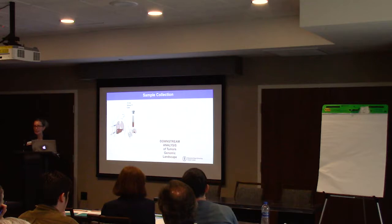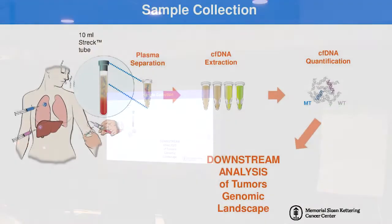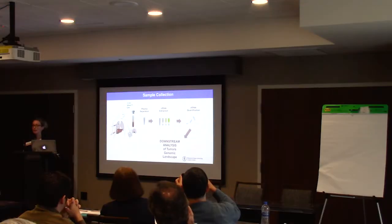In terms of collection, ctDNA is very straightforward — it is literally a blood sample, taken in a specialized tube called a strep tube, which allows for plasma separation from which cell-free DNA can be extracted, then quantified, and then downstream analyses can take place.